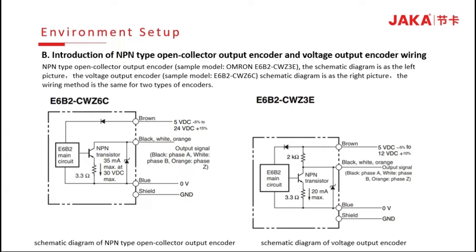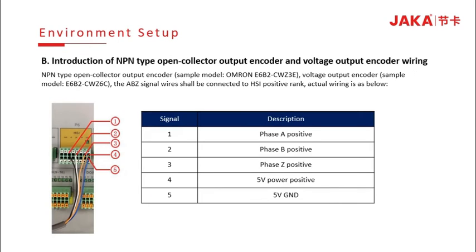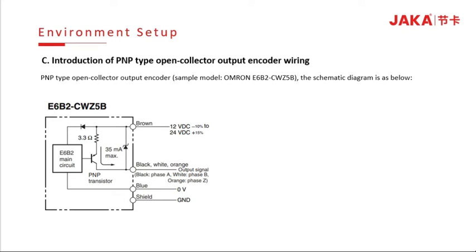The schematic diagram is as shown in the left picture for the voltage output encoder. The wiring method is the same for the two types of encoders. The actual wiring is as below: pin 1, 2, and 3 connect to the encoder phase A, B, and Z positive. Pin 4 and 5 are for power supply connection.